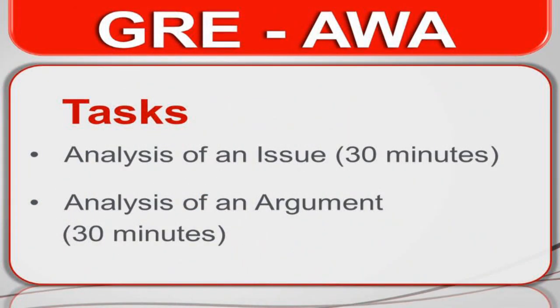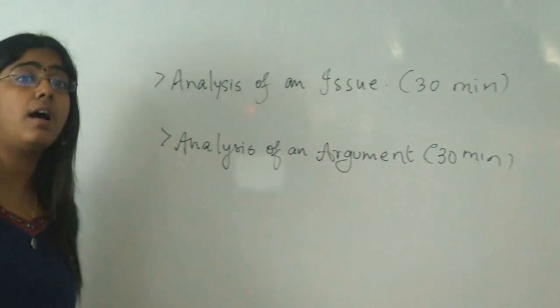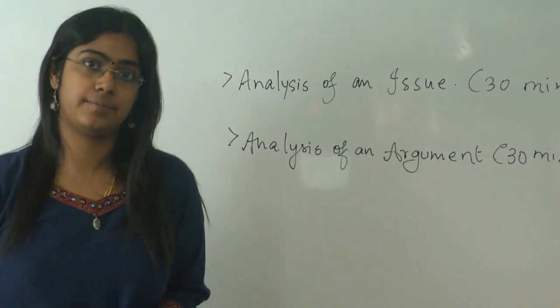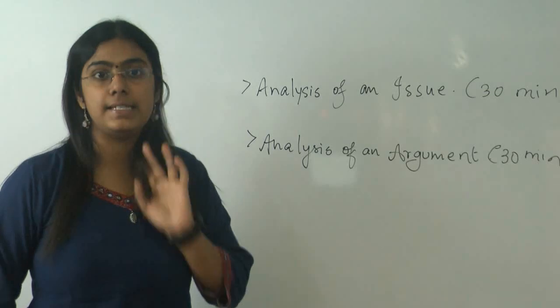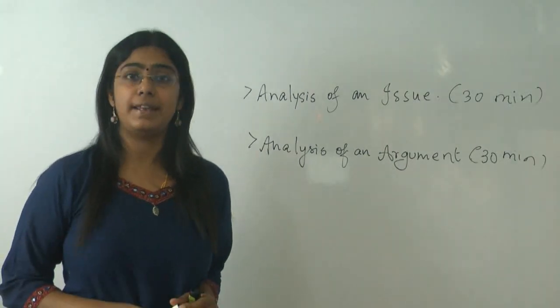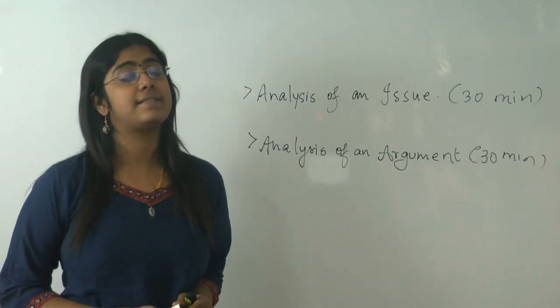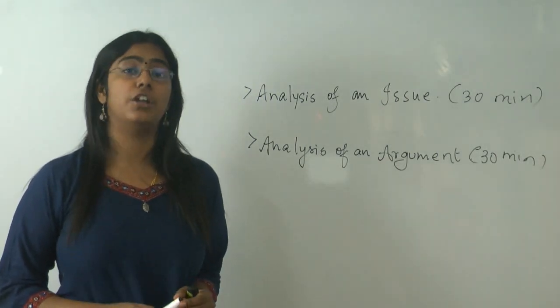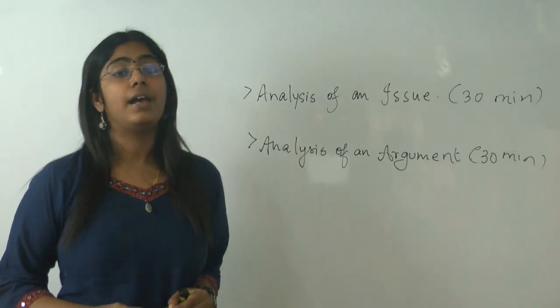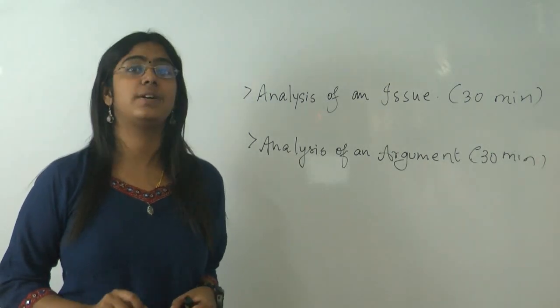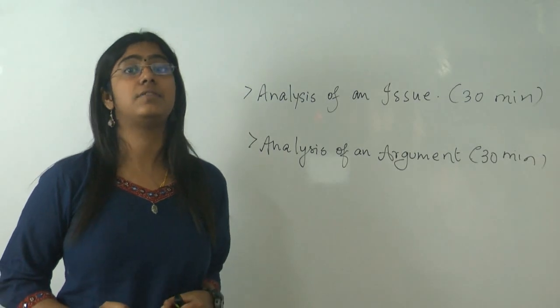Now let's see the tasks that you have in the AWA section. There are as I told you two tasks. One analysis of an issue and the second one analysis of an argument. Each task is 30 minutes long. So for the first one hour of your GRE you will be writing essays. In the first task that is the analysis of an issue you are given an issue something that is globally recognized. Remember that it is not something that requires specific knowledge. It is very general and you are required to analyze this issue. For this you are given 30 minutes.